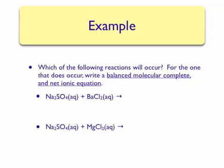If we mix sodium sulfate together with barium chloride, we can obtain two products. To predict these products, let's look at the ions that we can swap. Sodium sulfate contains the sodium ion and the sulfate ion, while barium chloride contains the barium 2+ ion and the chloride ion. If we swap these cations, we can form the products sodium chloride and barium sulfate.